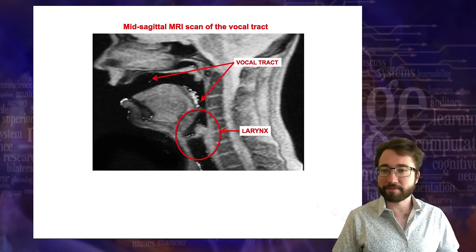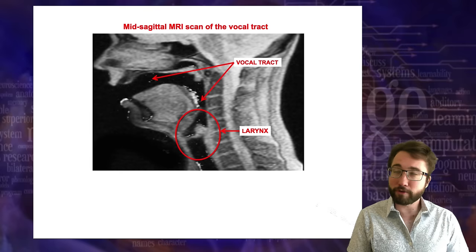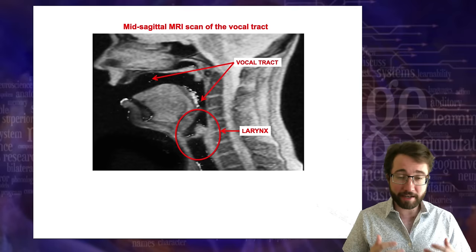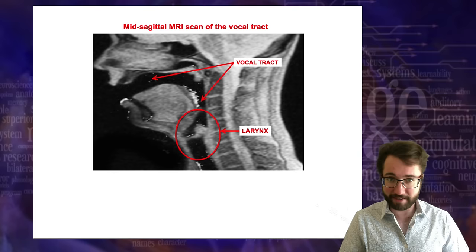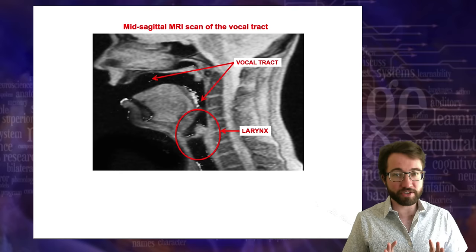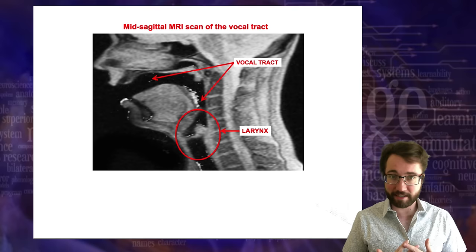So that's the larynx. To a first approximation, it has two states — closed (vibrating) and open (air flowing through). Sometimes there are intermediate states used to articulate certain sounds, which we'll talk about later. But for the basic sounds, the two states of the larynx are open and closed.